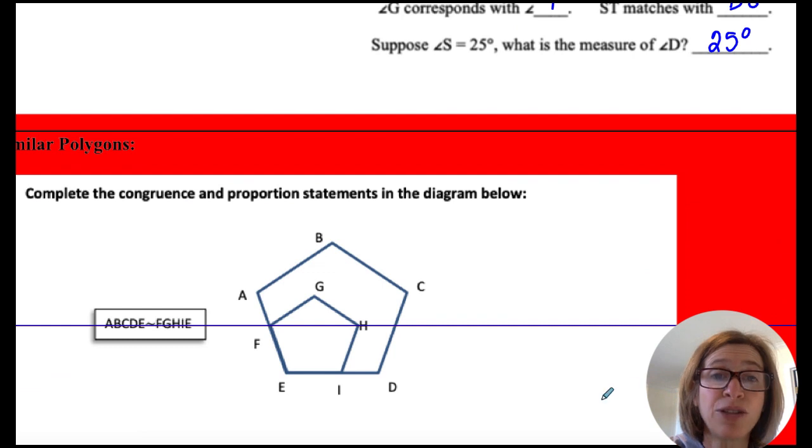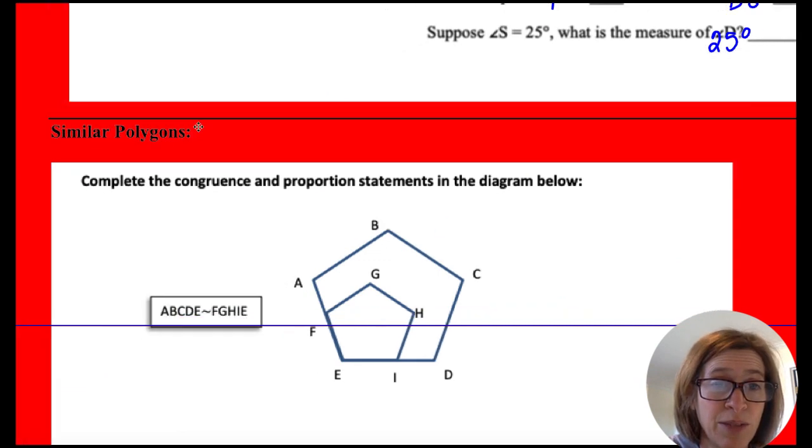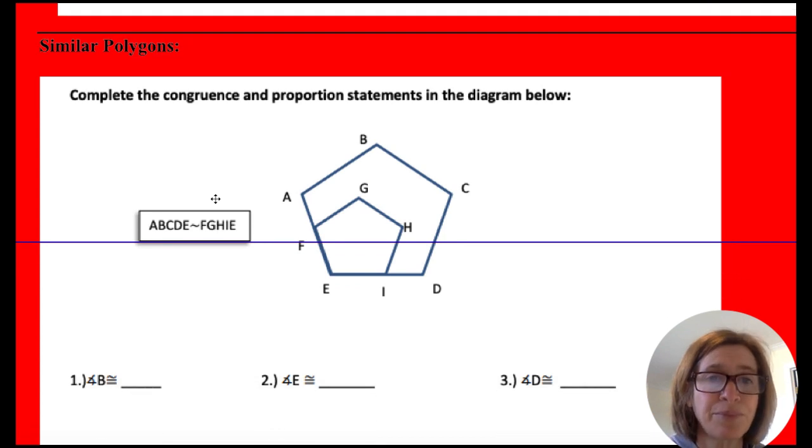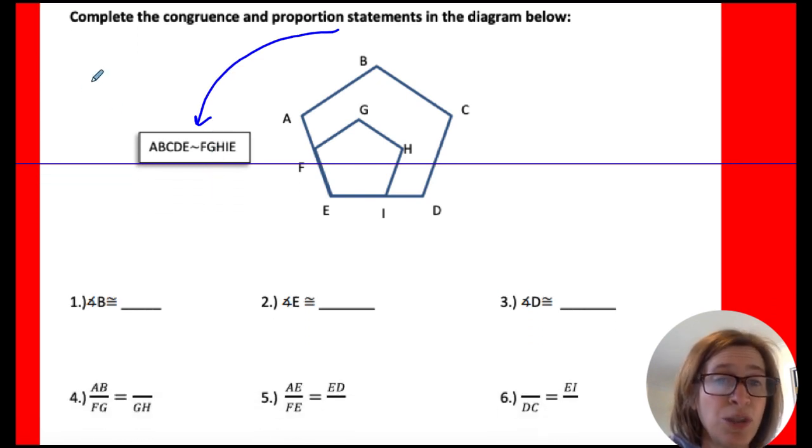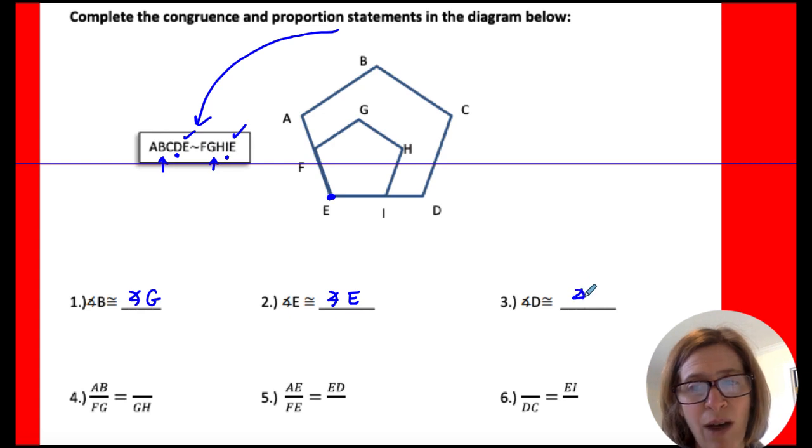So let's look at this together. Here's a similar polygon. It says complete the congruence and proportion statements in the diagram below. The first thing I do is I want to look at the similarity statement because that tells me what corresponds. So I can see that angle B corresponds to angle G, so they're congruent. Angle E corresponds to itself because it's in both figures. We call that a reflexive angle. So angle E corresponds to angle E, so it would be congruent. And angle D corresponds to angle I, so angle D and angle I would be congruent.